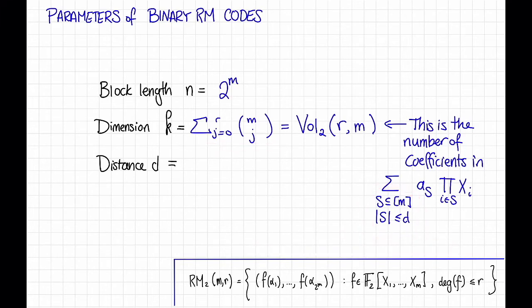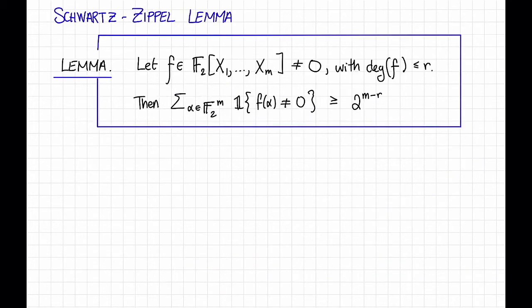Okay, so now we know the block length and the dimension of a binary Reed-Muller code. How about the distance? In order to understand the distance of a binary Reed-Muller code we're going to use something called the Schwartz-Zippel lemma.